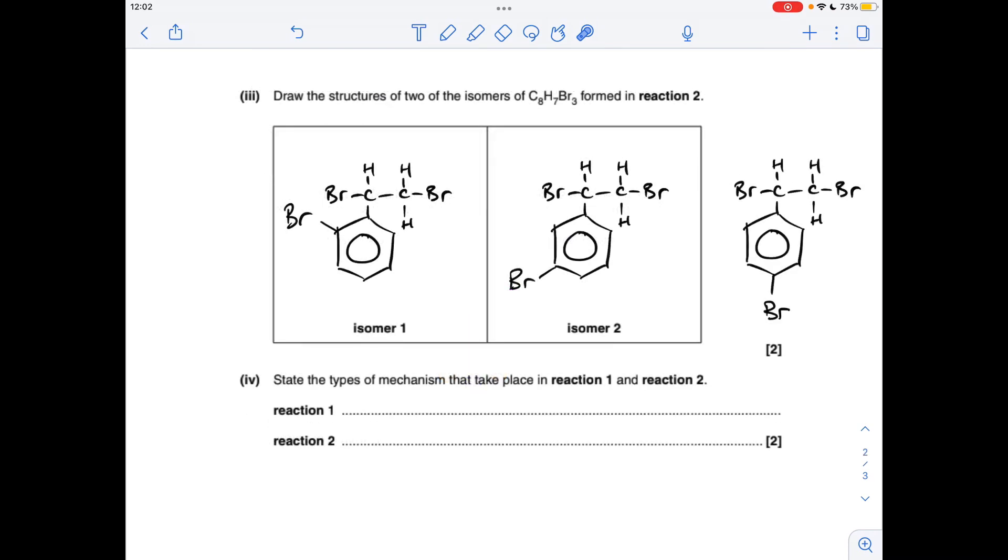Next part, there's three possible answers. You could either have the two-bromo isomer, the three-bromo isomer, or the four-bromo isomer. And I've just put them on this side of the molecule just because it would have crashed in at that hydrogen.